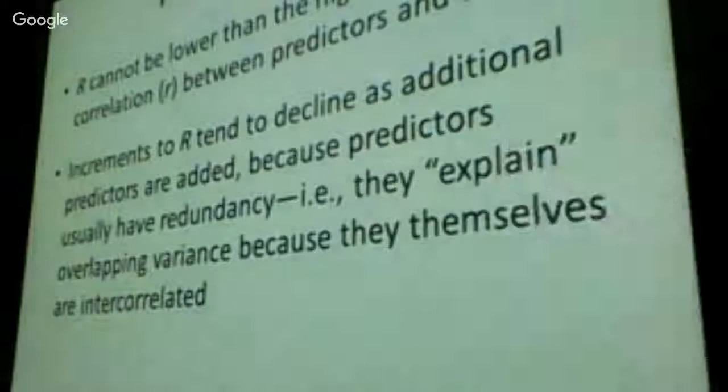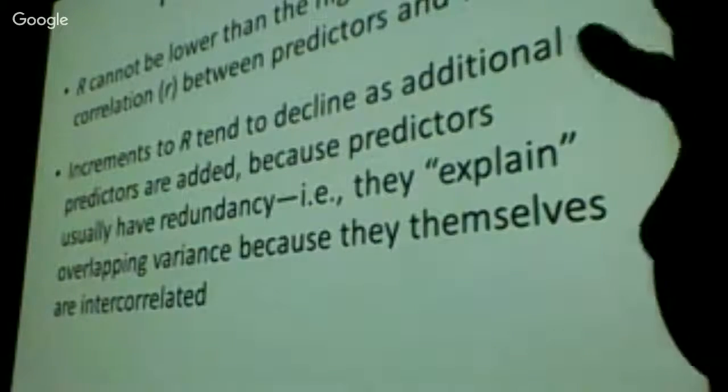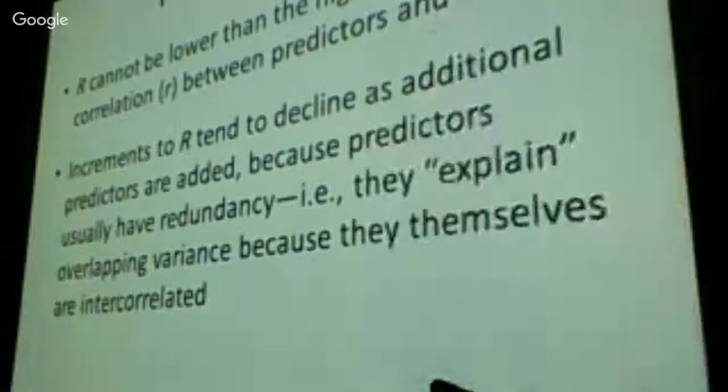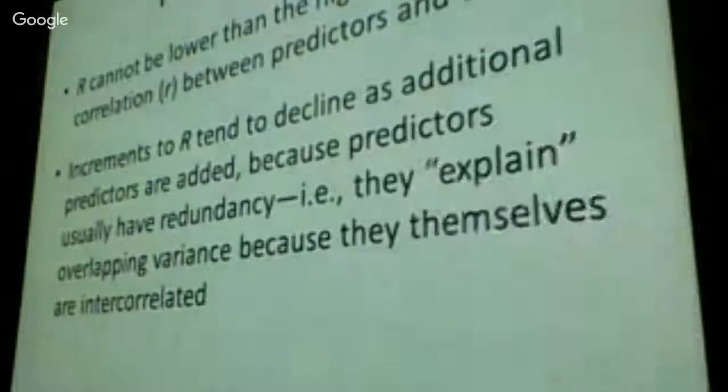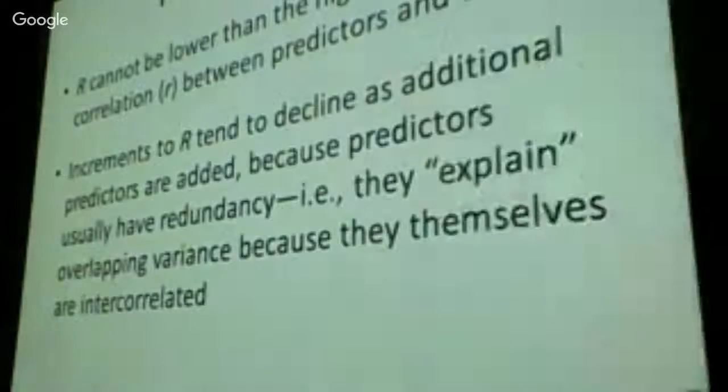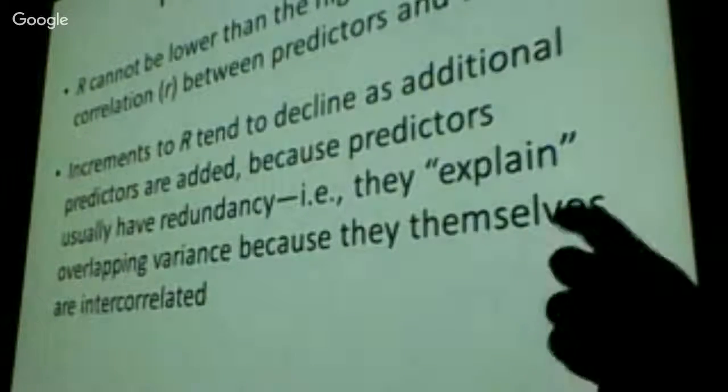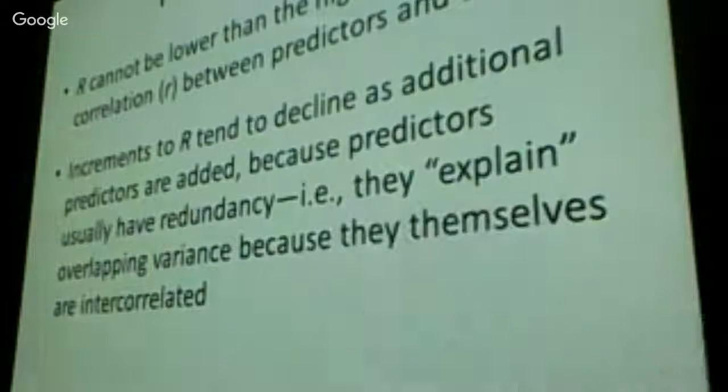So every time I add a new variable, my R squared goes up a little bit. So that's why I keep on adding them. They go up a little bit. The weird thing is, the R cannot be lower than the highest one there is. What does that mean? It means that it can't go down. So in other words, every time I add a variable, I'm adding value. I'm never losing value.